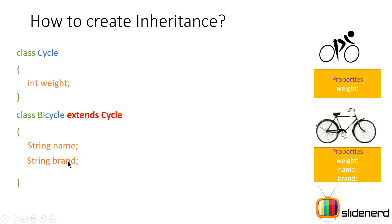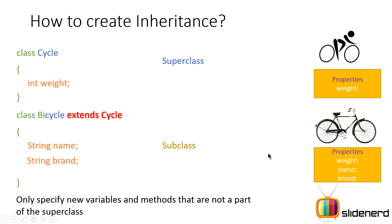Inside Bicycle you simply put String name and String brand. Notice that even though I have not written int weight here, since we said extends Cycle, a copy of that property is created inside Bicycle. So Bicycle clearly has three properties: weight comes automatically from Cycle, whereas name and brand are created inside Bicycle. The Cycle is the superclass, Bicycle is the subclass — only specify the new variables and methods not part of the superclass.